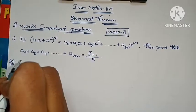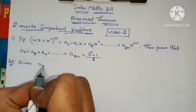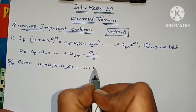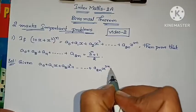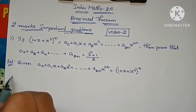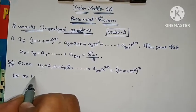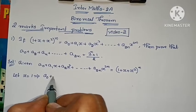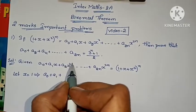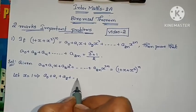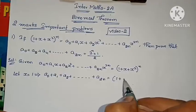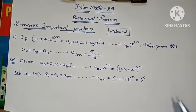Solution: Given a₀ + a₁x + a₂x² + ... + a₂ₙ x^(2n) = (1 + x + x²)^n. Let x = 1: a₀ + a₁ + a₂ + ... + a₂ₙ = (1 + 1 + 1)^n = 3^n. Let this be equation 1.